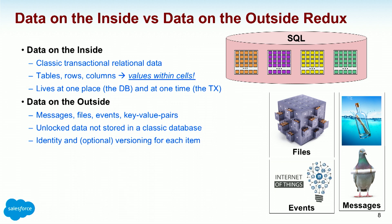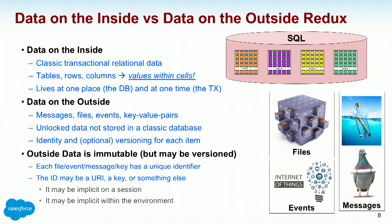Data on the outside is different: messages, files, events, key-value pairs. Those scalable key-value stores don't offer transactional serializability, so the ordering is different. Unlocked data is not stored in the classic database, but the act of unlocking it means you atomically get identity and optional versioning immediately. Outside data is immutable but may be versioned. Each file, message, or key has a unique identifier — a URL or something else — that identifies it now that it's popped out of the database.